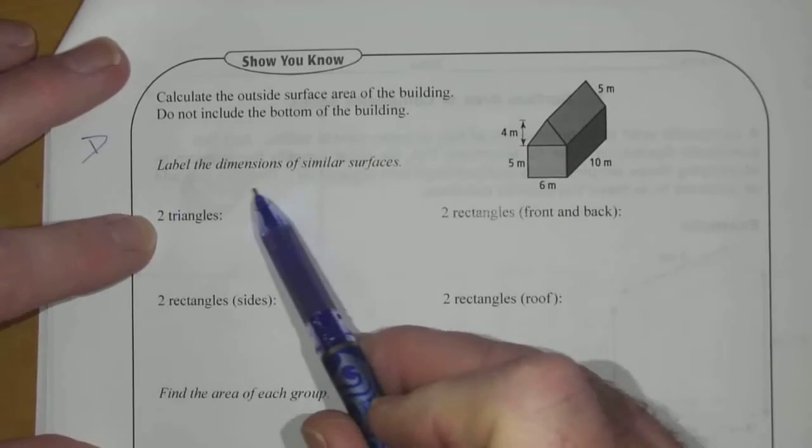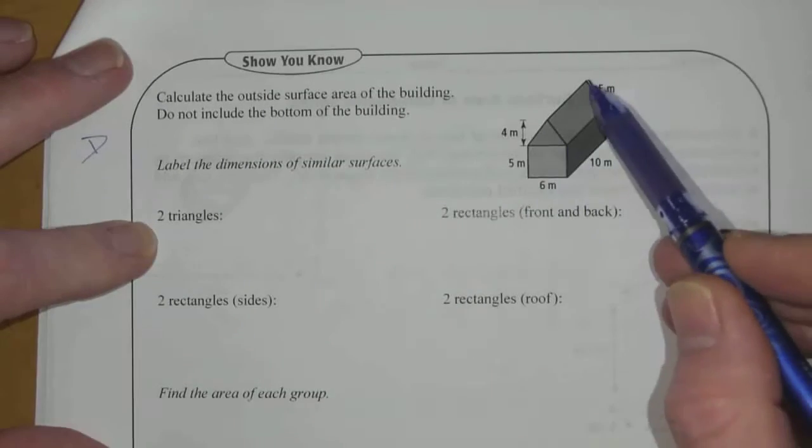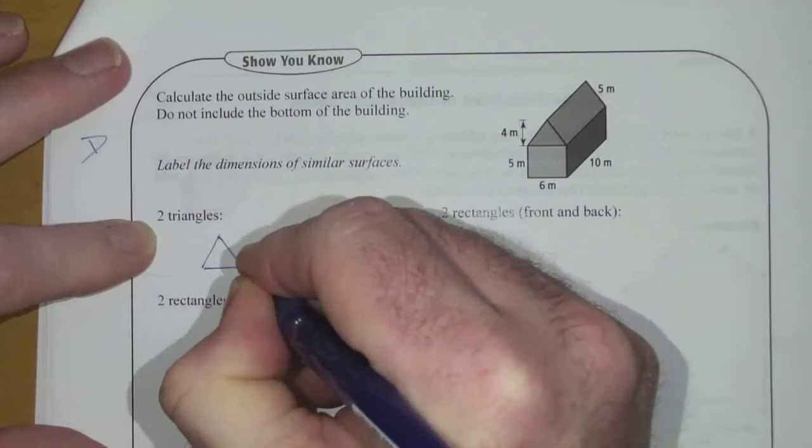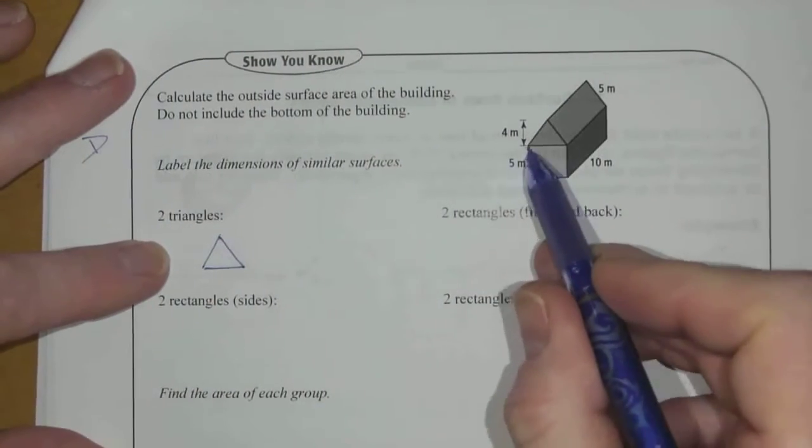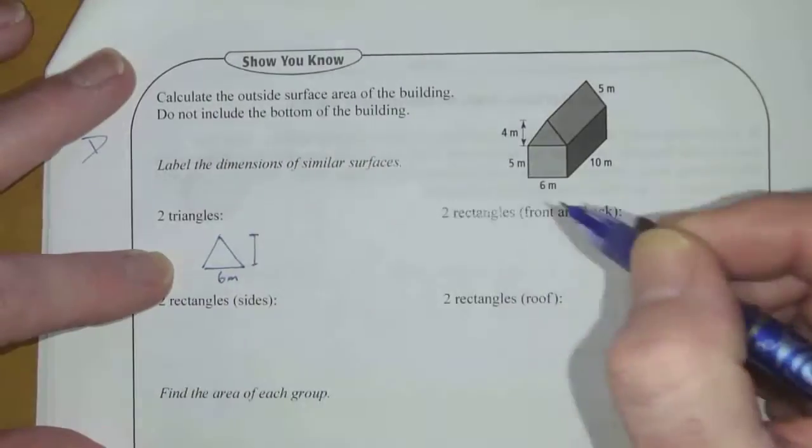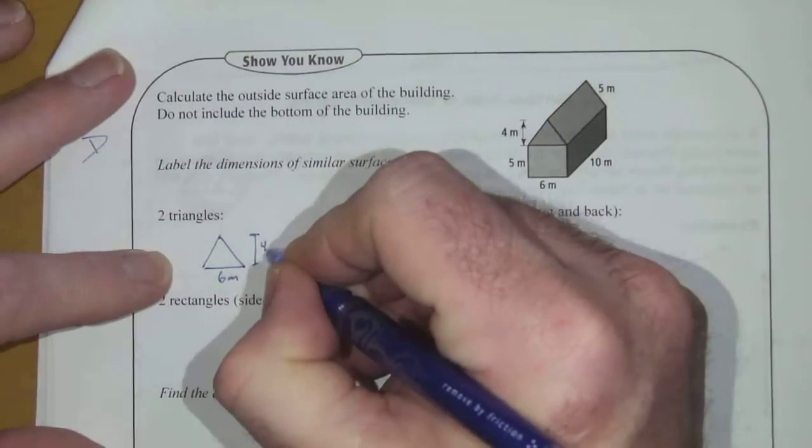Label the dimensions of similar surfaces. We've got two triangles that match each other, and if we draw them, we have a base of 6 meters and then a height we're given is 4 meters.